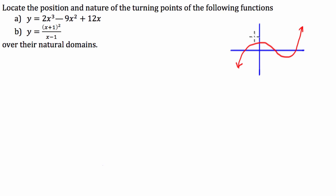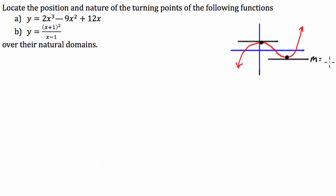The turning points of this particular function that I've just drawn are around about here and there. Now, what's the telling factor about each of these turning points, or what we can use to identify these turning points, is if we had to draw a tangent line or find the derivative or the gradient at these particular points, we would find that the gradient would be equal to zero. So that's what we're going to use to find our turning points.